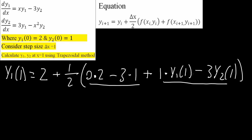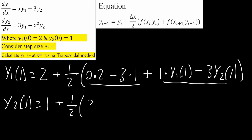We need two equations to solve two unknowns, so there will be a second equation using this formula. We get y2(1) equal to the value of y when x is equal to 0 for equation 2, which is 1 — so y2(0) equals 1. Plus delta x, same step size: 1/2. Using this equation, when x is equal to 0 we have 3 times y1 — y1 when x is equal to 0 is 2 — so 3 times 2 minus x squared. Since x is 0, we get 0 squared times y2. The value of y2 when x is equal to 0 is 1, so times 1.